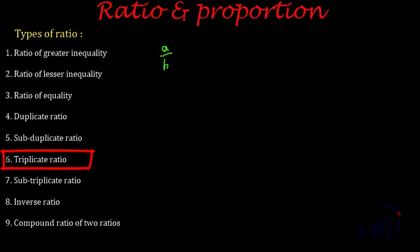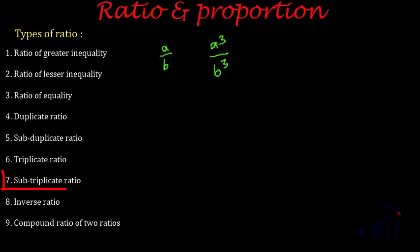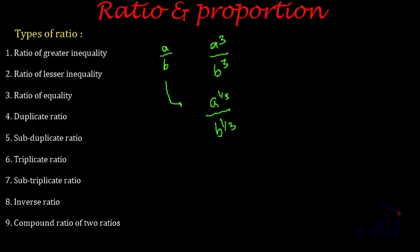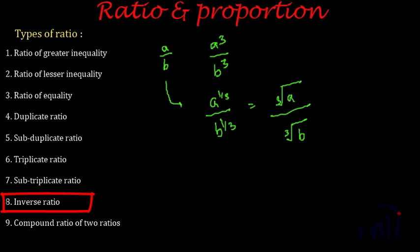The sixth type is the triplicate ratio. If you have a ratio A is to B, then A cubed is to B cubed is called the triplicate ratio. The sub-triplicate ratio of A is to B is A to the power 1/3 is to B to the power 1/3, or equivalently the cube root of A is to the cube root of B.